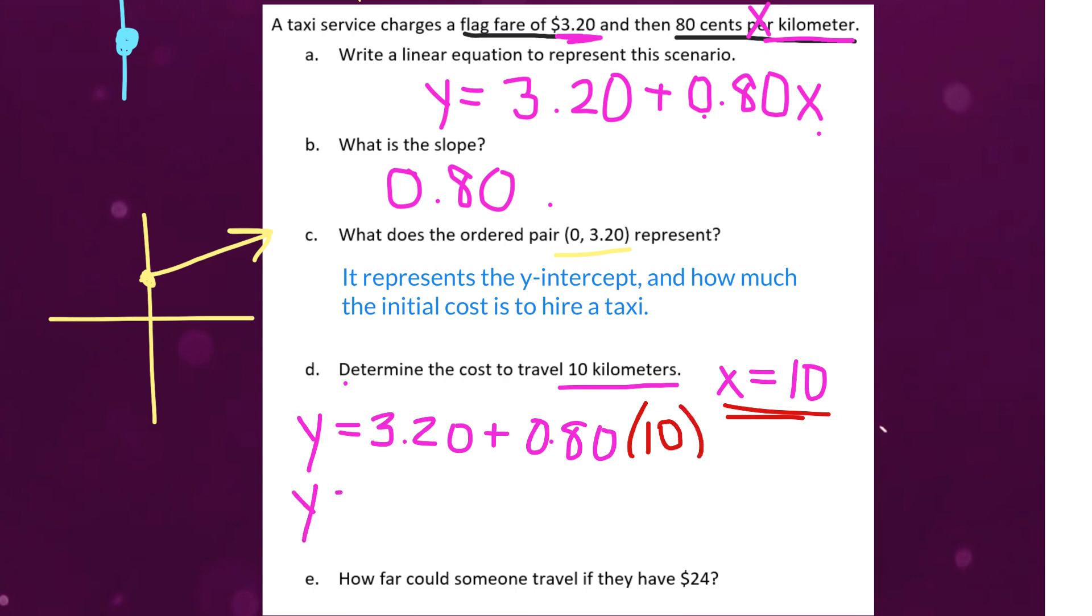So, to solve this, we're going to do 3.20 plus 0.80 times 10. I know that's equal to 8. Of course, we're following order of operations, BEDMAS rules. We multiply before we add here. So, that's why I'm multiplying those together first. Now, we're just going to add 3.20 plus 8 to get our answer. It's going to cost $11.20.